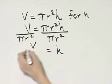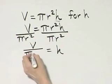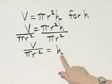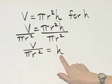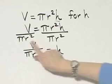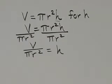On the left side, I have v divided by pi r squared. Notice I have solved for h because I have h by itself on one side of the equation, and no h is over here. I have solved for h.